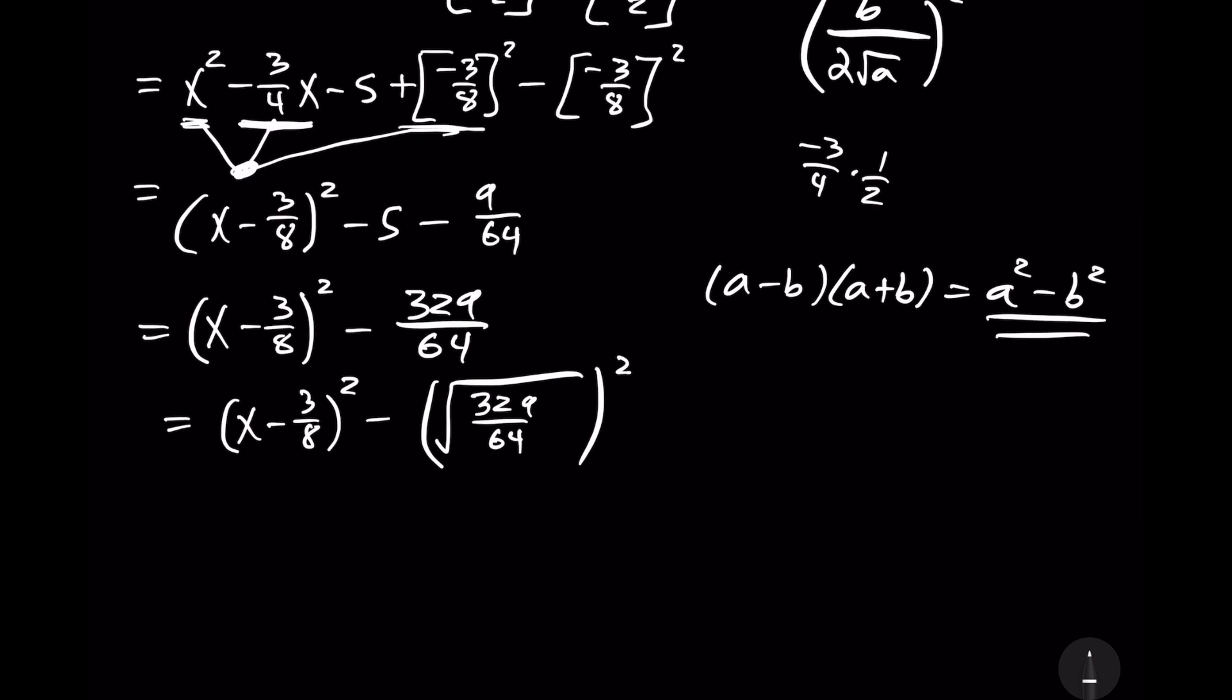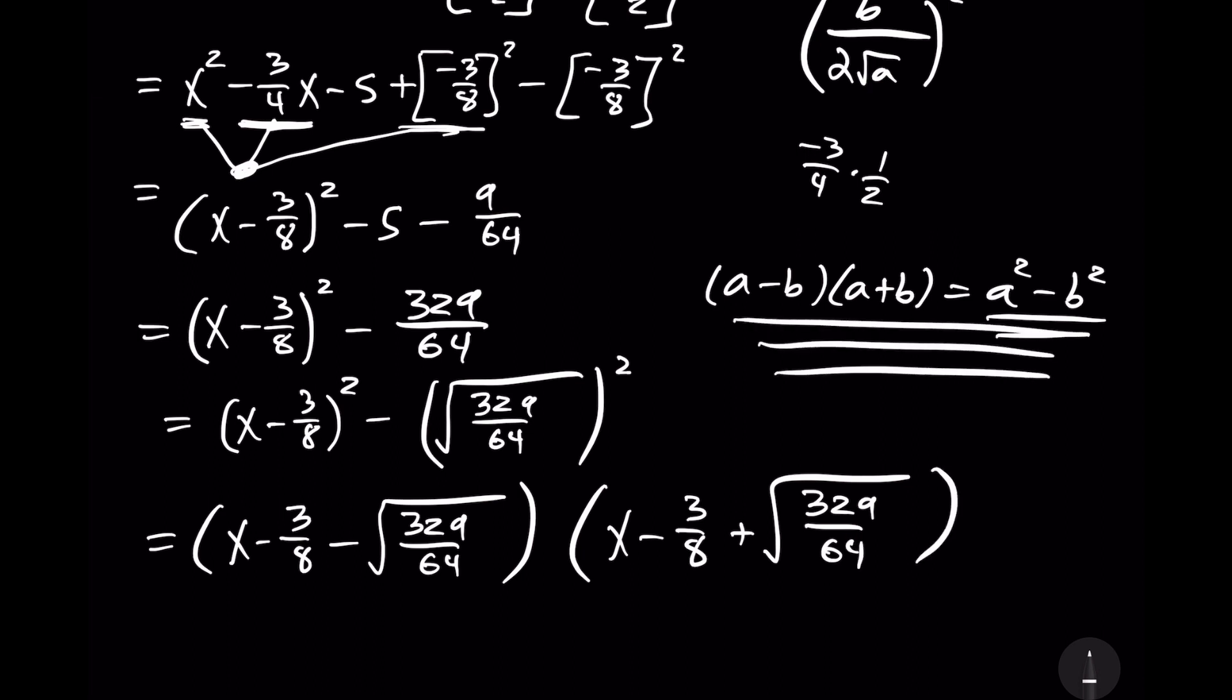And so, we're going to make use of the difference of squares to get x minus 3 over 8, minus the square root of 329 over 64, times the quantity x minus 3 over 8, plus the square root of 329 over 64. So, we just made use of this pattern there.